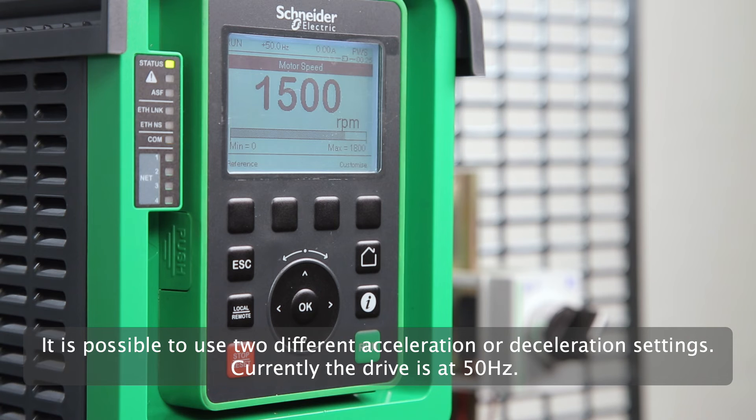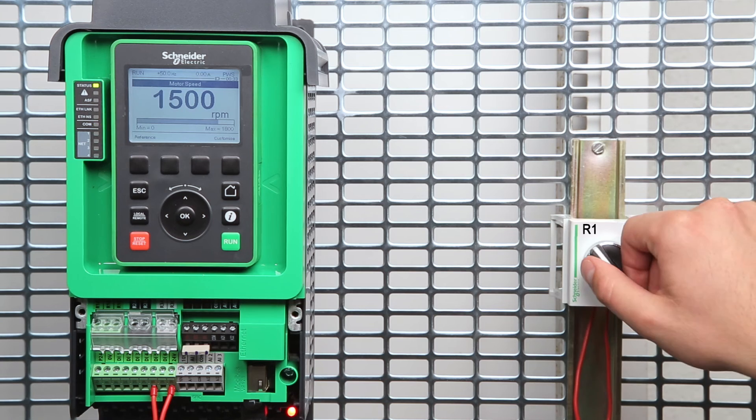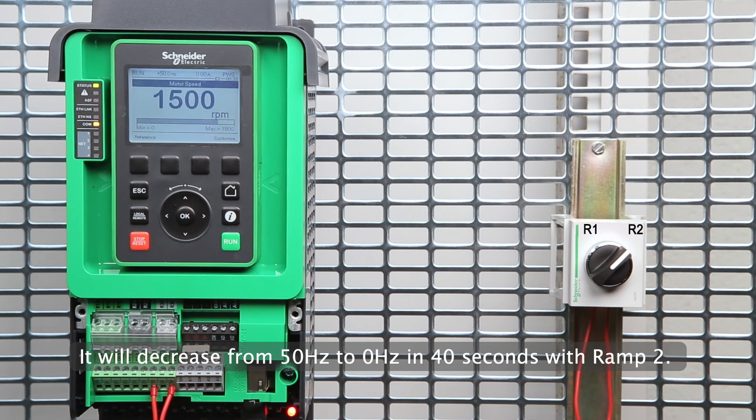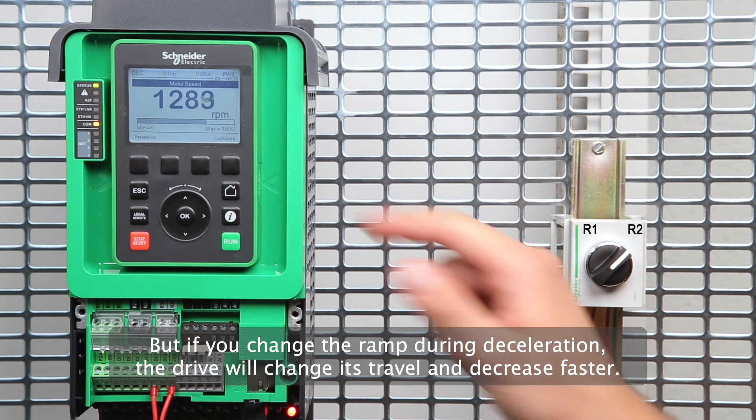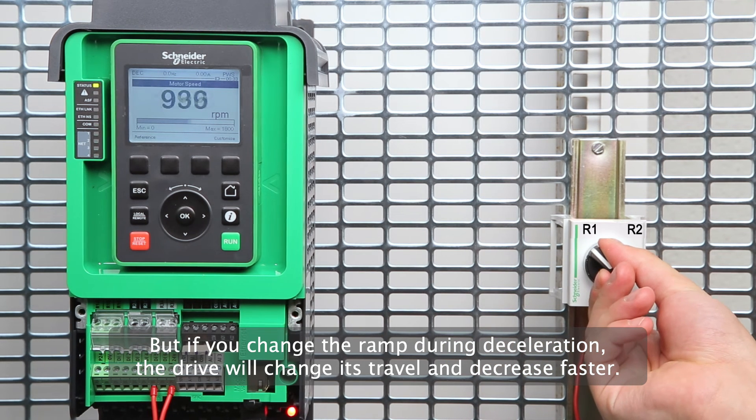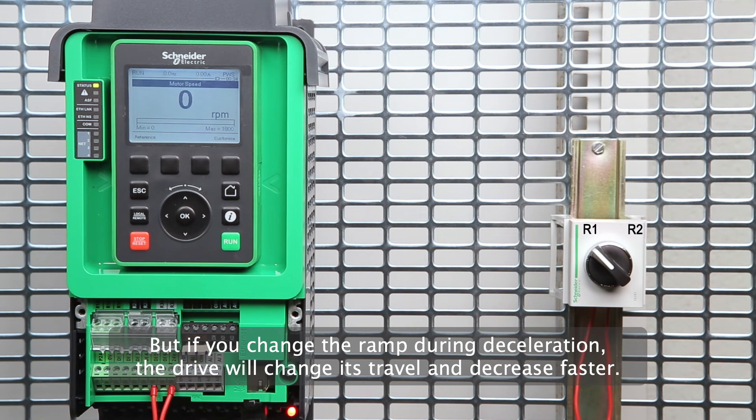It's possible to use two different acceleration or deceleration settings. Currently, the drive is at 50 hertz. It will decrease from 50 hertz to zero hertz in 40 seconds with ramp 2. But if you change the ramp during deceleration, the drive will change its travel and decrease faster.